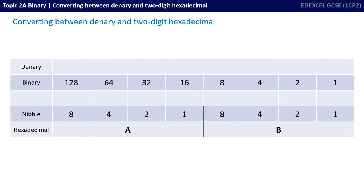What about if you get asked to go the other way — if you're given a hexadecimal number and asked to put it into binary or denary? Again, if you get told to put it into denary, just work through binary first. It's quite a straightforward process.